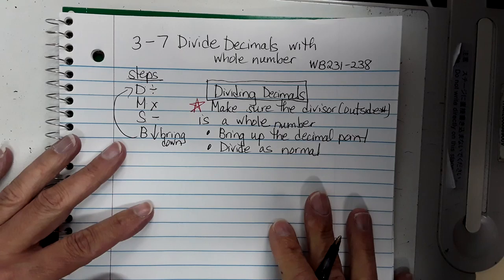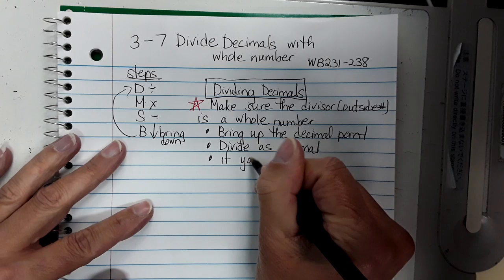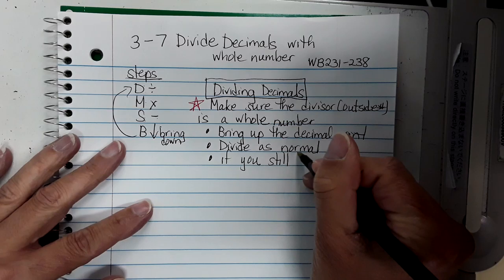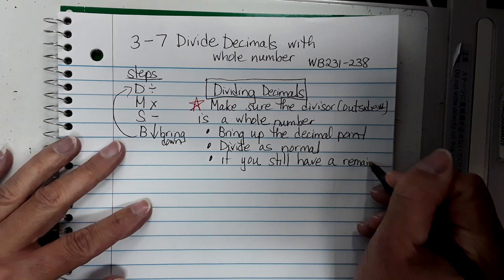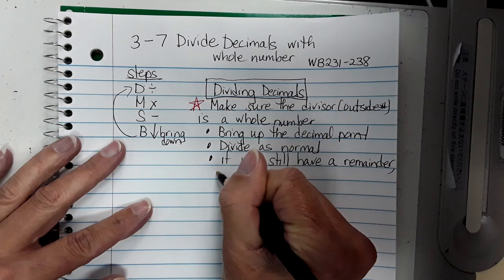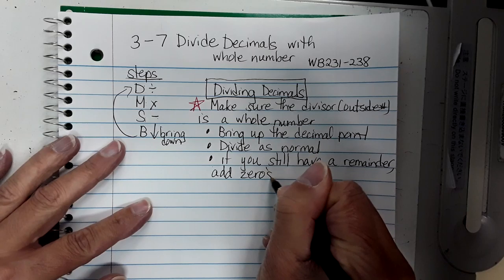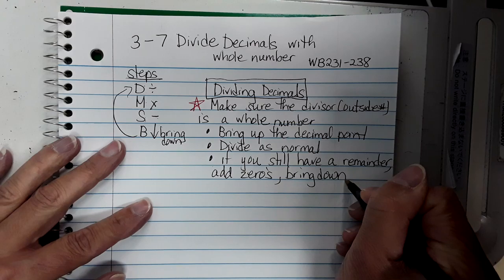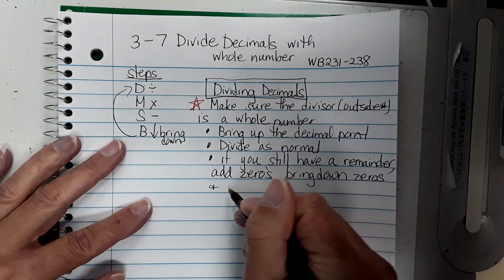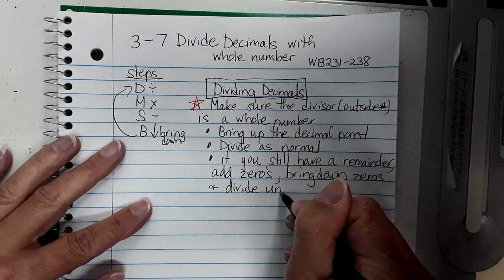Now there are going to be cases where when you're dividing you still have a remainder. No more little r's — I don't want to see any r's. If you still have a remainder, you're going to add zeros and then bring down zeros, and divide until there is no remainder.